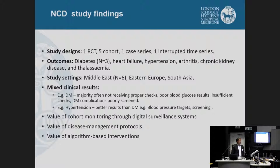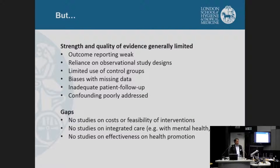Importantly, what these studies also showed was the value and feasibility of prospective digital surveillance systems and the importance of setting up these systems. This was with Palestinian refugees in Jordan. Other studies showed the value of disease management protocols and algorithm-based interventions. However, the strength and quality of the evidence was generally limited — outcome reporting was weak, diagnostic criteria were not always clear, there was reliance on observational rather than experimental study designs, limited use of control groups, and biases related to missing data and inadequate patient follow-up.